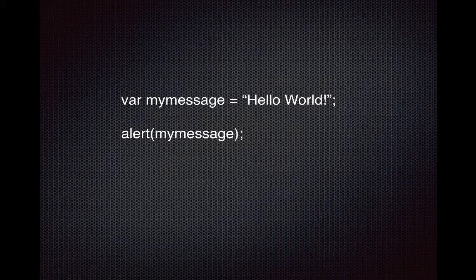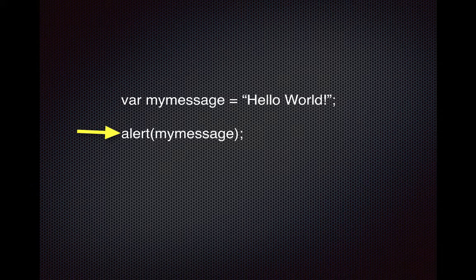Let's look at a simple example. We haven't dug into the JavaScript syntax yet, but here the first line defines a variable called myMessage and assigns it the string value 'hello world'. The second line alerts the message — alerting means it pops a small window on the browser with 'hello world' in it. First it reads the variable value, and when it reaches the second line it already knows what myMessage is, so it can print it.